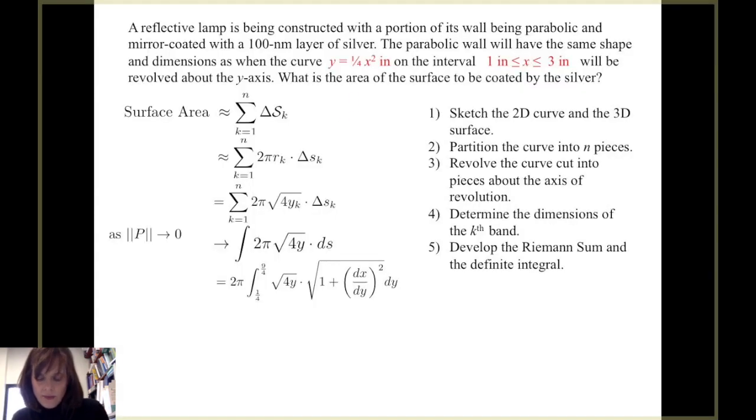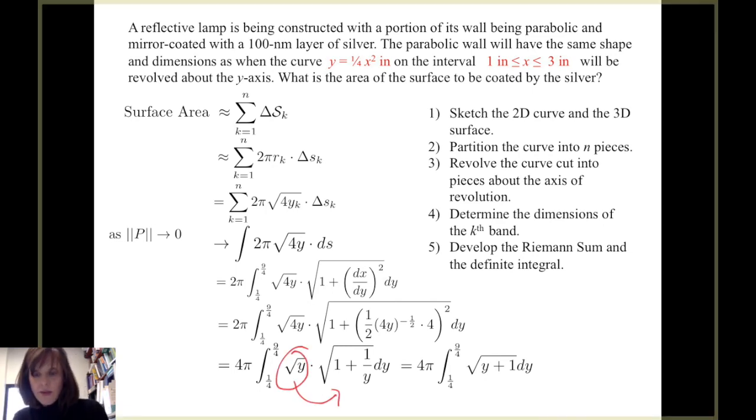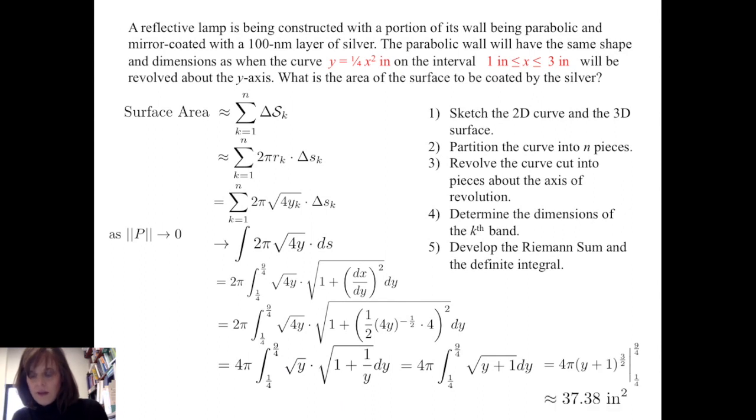dx dy is the derivative of x equals 4y to the 1 half power. So I've got 2 pi times the integral from 1 fourth to 9 fourths of the square root of 4y times the square root of 1 plus 1 half 4y to the negative 1 half times 4 all squared dy. I perform some algebra and simplify. And I get 4 pi times the integral from 1 fourth to 9 fourths of the square root of y times the square root of 1 plus 1 over y dy. I perform some more algebra. And I can bring this other square root of y inside. And I get 4 pi times the integral from 1 fourth to 9 fourths of the square root of y plus 1 dy. This can be integrated straightforwardly. And I get, again, approximately 37.38 square inches for the surface area. Be sure that you're able to do this algebra very carefully on your own.